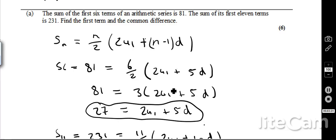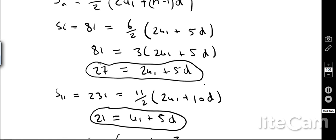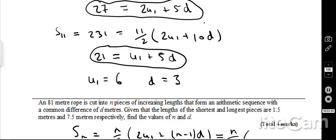I then do exactly the same thing for the second part, and there we go, I can find s of 11, which is 231, and that's the 11th term, so 11 over 2, 2u1 plus 10d. And again if I simplify that, that gives me 21 is equal to u1 plus 5d.